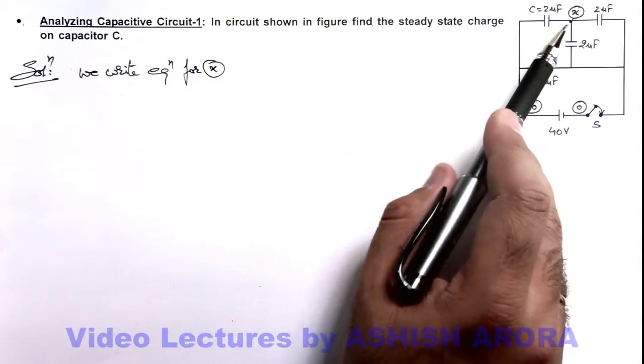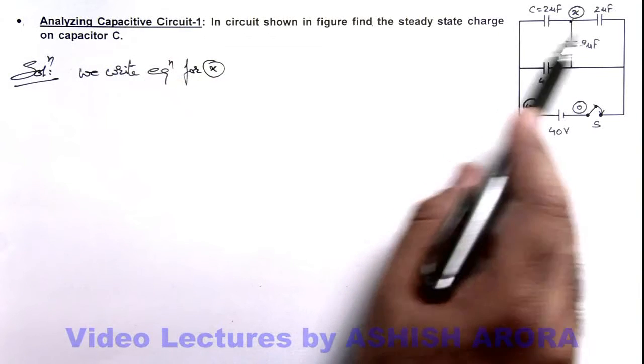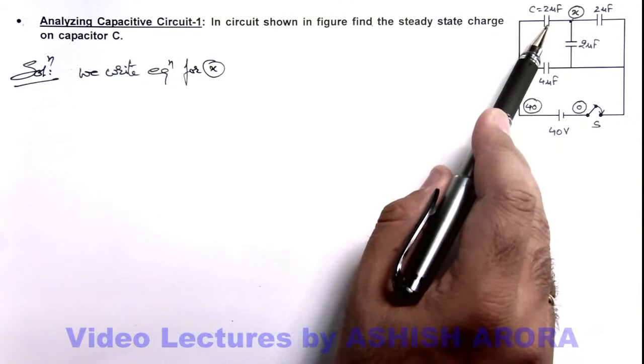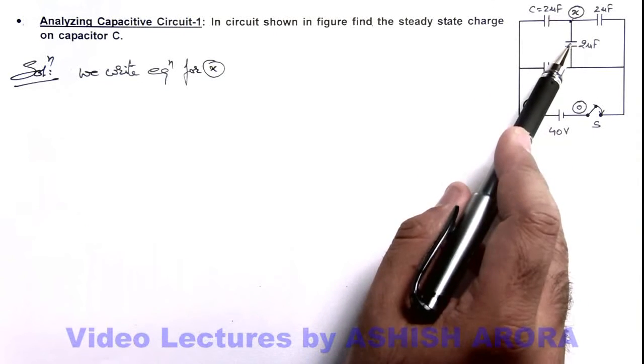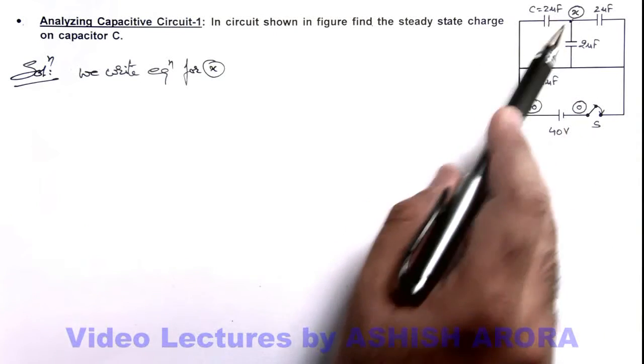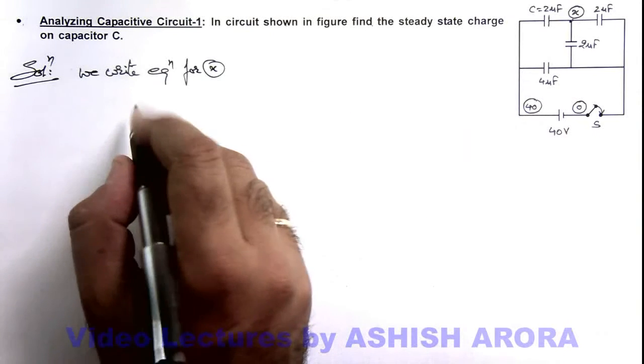From this terminal where potential we are taking x there are 3 plates connected. And the sum of the charges on these 3 plates must be zero as the charges can never jump over the capacitor plates.